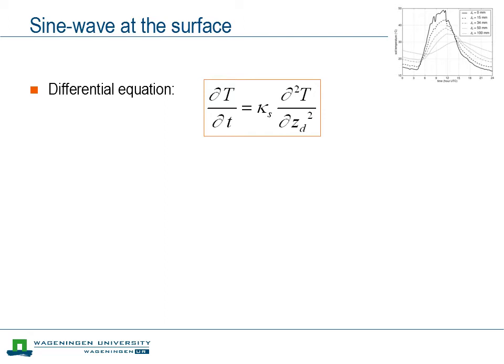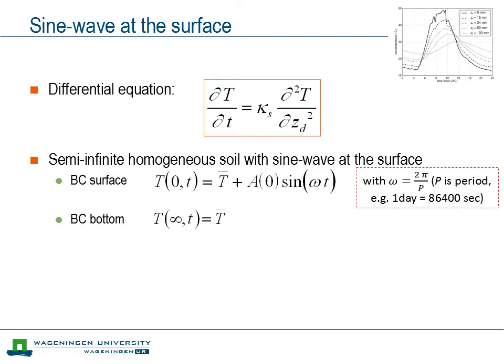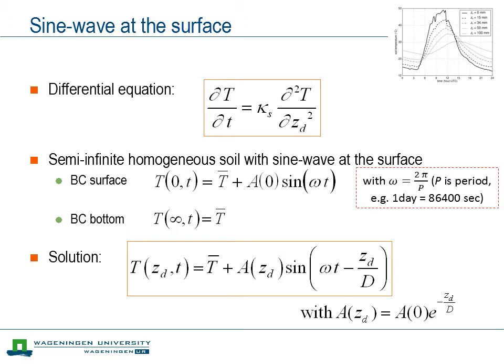To solve the differential equation, we need boundary conditions. The boundary conditions we assumed are a sine-type function variation at the top of the soil — a variation around the mean temperature with amplitude A and frequency omega. And we assumed a boundary condition at the bottom, where at infinite depth the soil temperature equals the mean temperature. Based on the differential equation combined with these boundary conditions, we get an expression for temperature as a function of depth and time.